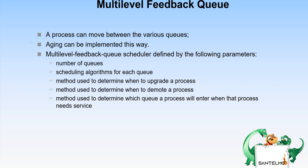A multi-level feedback queue combines several algorithms — first come first serve, short job first, preemptive and non-preemptive priority, and round robin. A process can move between various queues, and aging can be implemented that way.